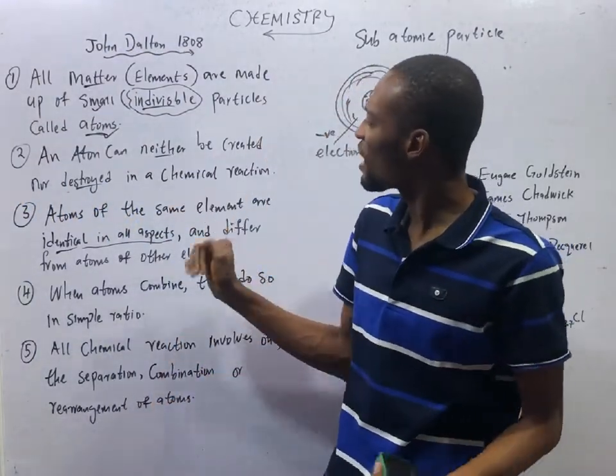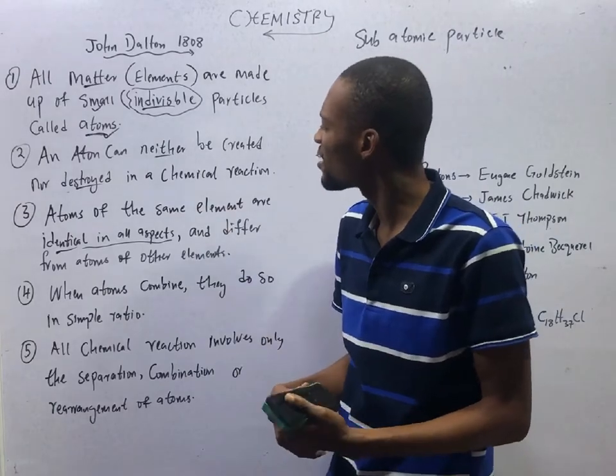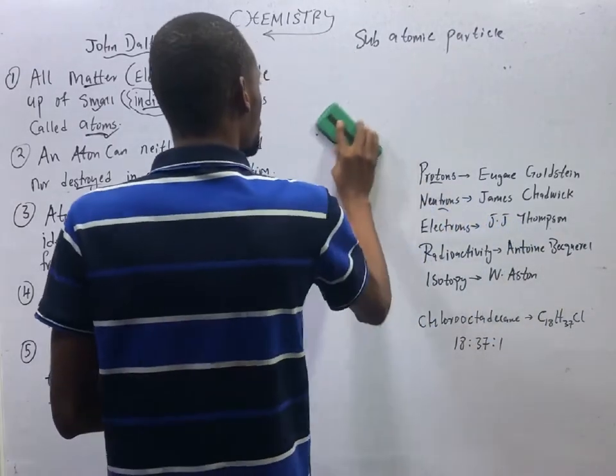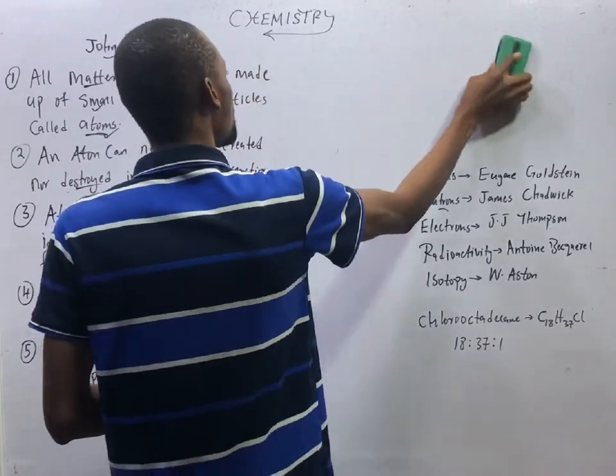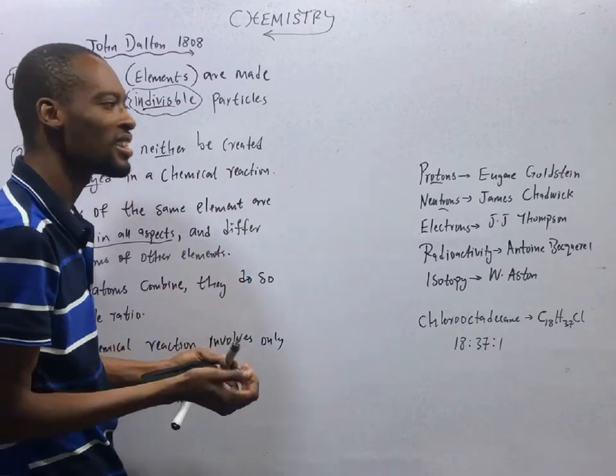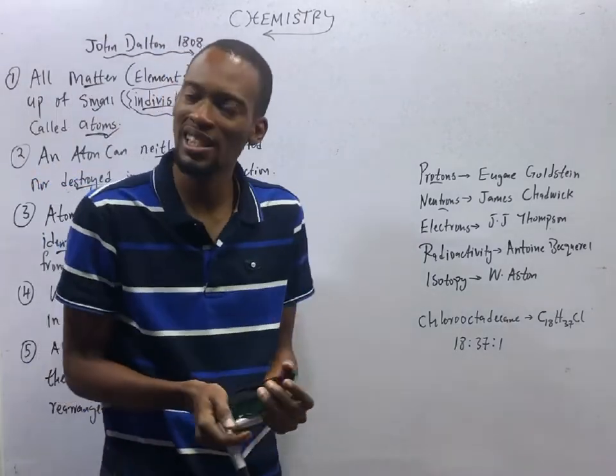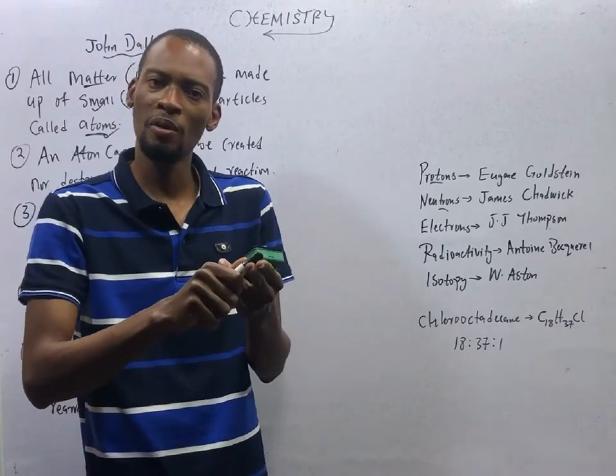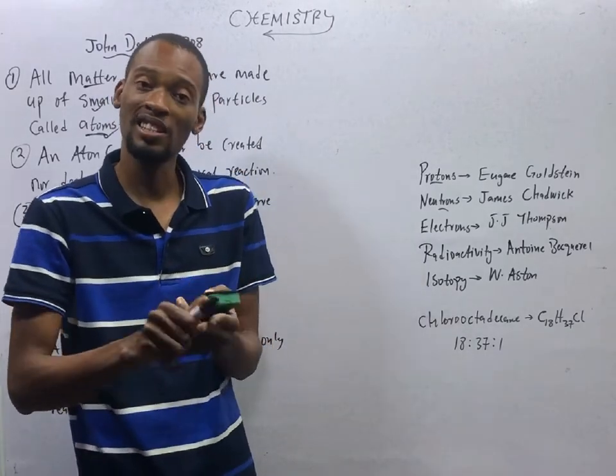Then, an atom can neither be created nor destroyed in a chemical reaction. Normally, this is one of the successes of Dalton's atomic theory, to an extent, because it helps us to explain the law of conservation of matter, the law of multiple proportions, the law of constant composition.